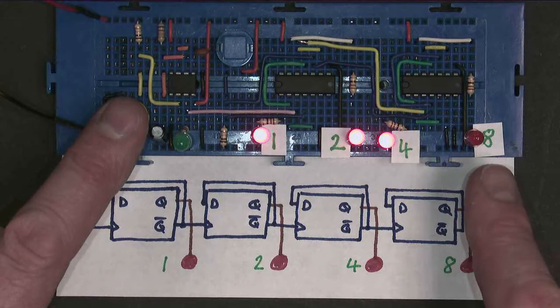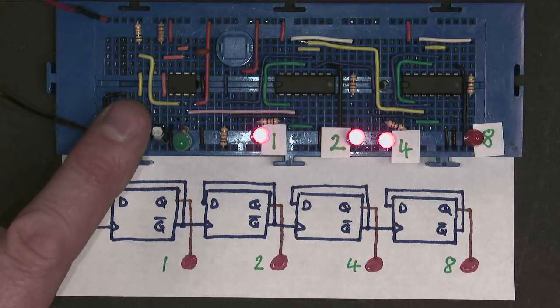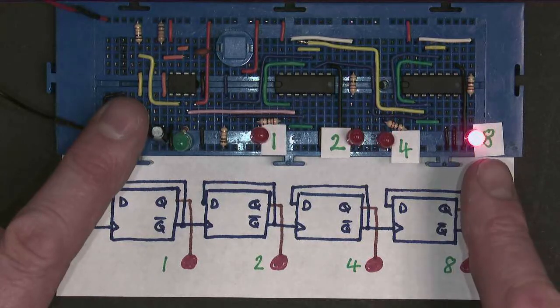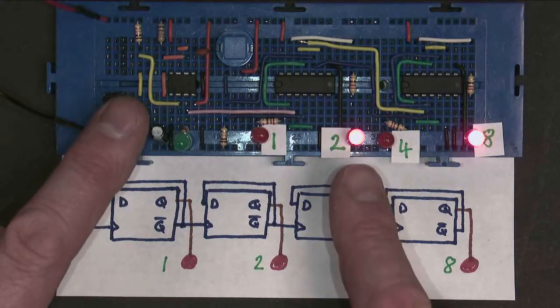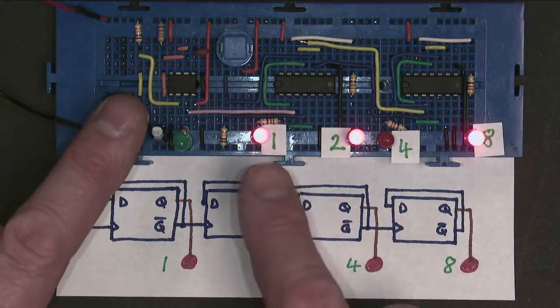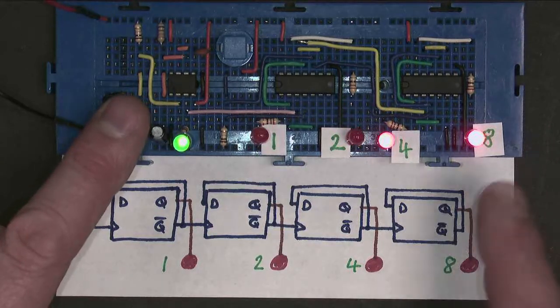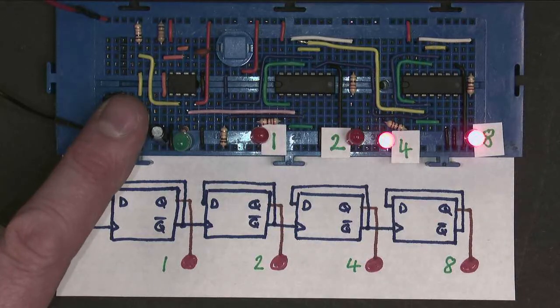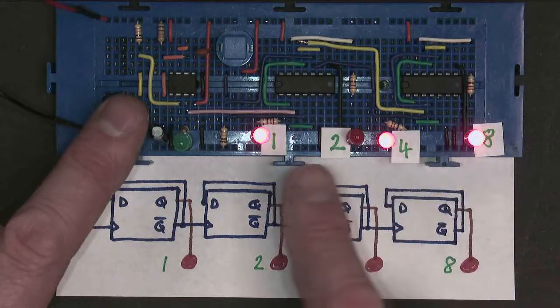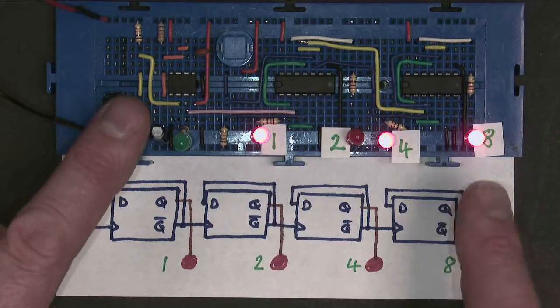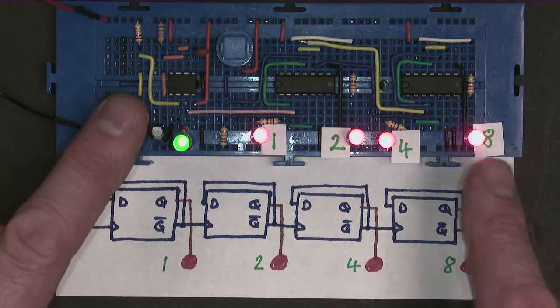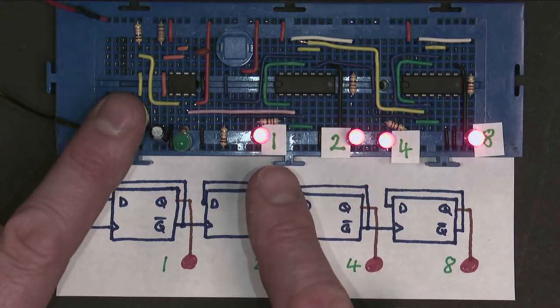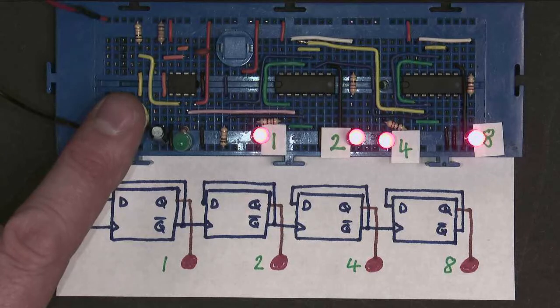But I have a fourth bit here, so pressing again, eight on its own. Eight and one is nine. Eight and two is ten. Eight and two and one is eleven. Eight and four is twelve. It's getting quite stressful now. Eight and four and one is thirteen. Eight and four and two is fourteen. Eight and four and two and one is fifteen, which is the max we can count to with four bits.